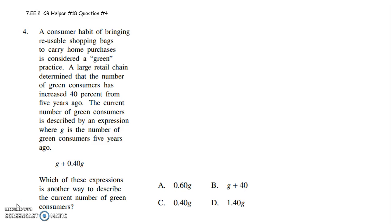The current number of green customers is described by the expression where G is the number of green customers 5 years ago. Which is another way, so it's G plus 0.40G, which is another way to describe the current number of green customers. Alright, whew, a lot of words.